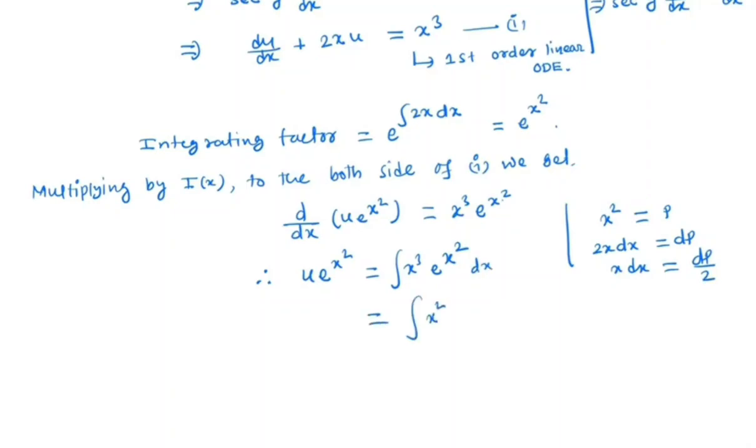So we have x² e^(x²) times x dx. So x² is p, e^p, x dx is dp/2, which is equal to 1/2 integral of p e^p dp.